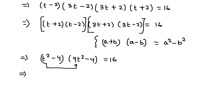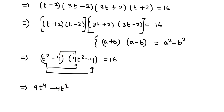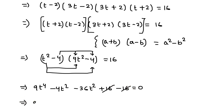Expanding: 9t⁴ minus 4t² minus 36t² plus 16 equals 16. Taking 16 to the left-hand side, it becomes minus 16, so positive 16 and negative 16 cancel out. This gives us 9t⁴ minus 40t² equals 0.